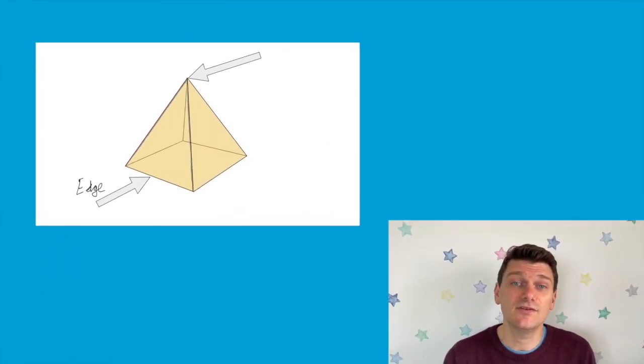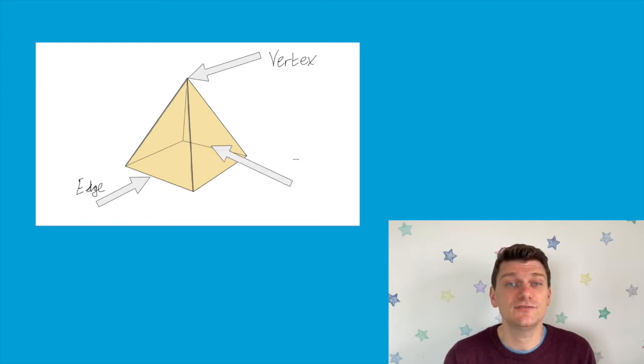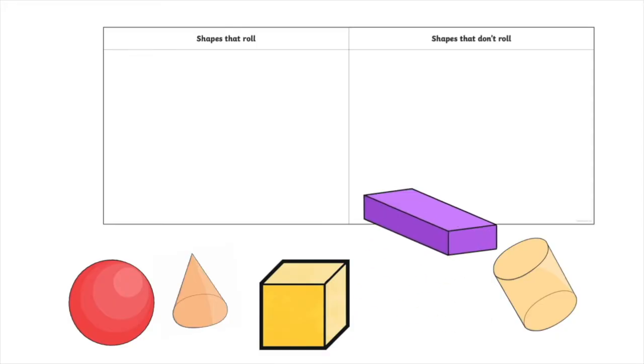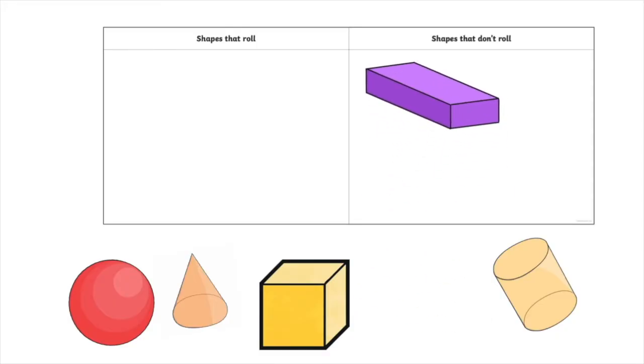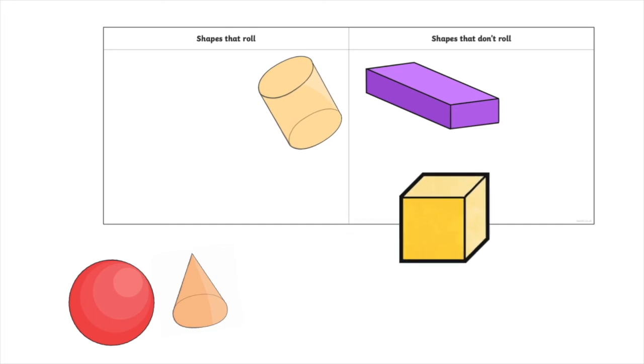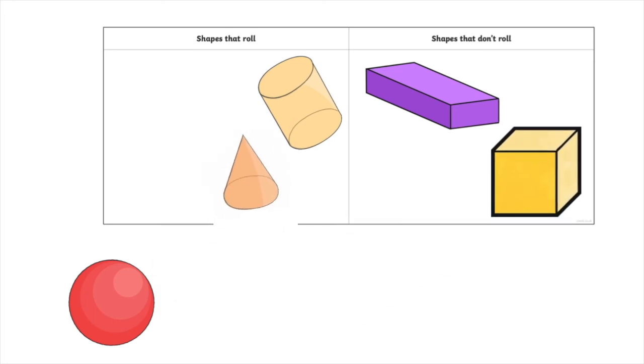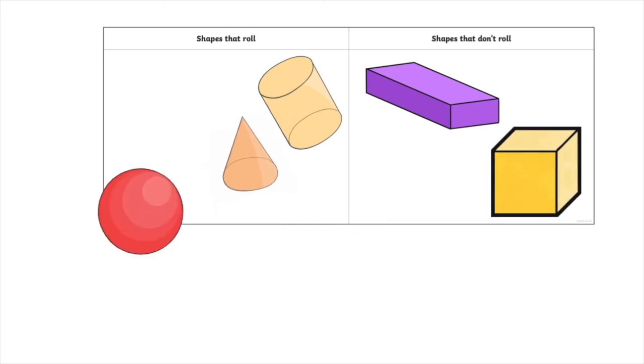It's a great opportunity to discuss the features of 3D shapes and clarify some of the key vocabulary such as edges, faces, and vertices. You could even carry out some sorting activities based on these features. For example, children use their knowledge of flat and curved surfaces to decide on which shapes will roll and which will not.